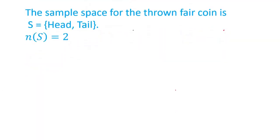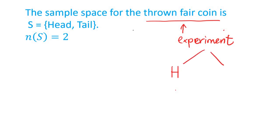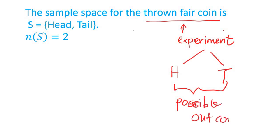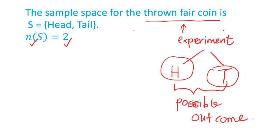So the first example: the action is throwing a fair coin — this is your experiment. After the action, what is possible I can get is either head or tails. So this is a possible outcome. I have two possible outcomes, so the number of sample space is equal to two.